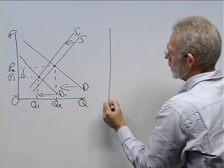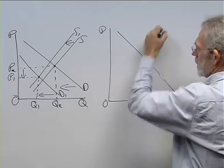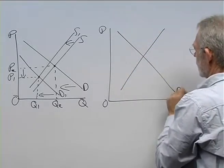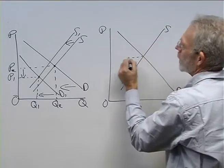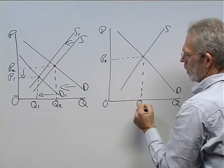Again, we start with a picture of a market. In demand and supply, we have equilibrium price and equilibrium quantity.